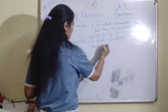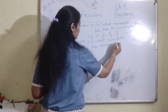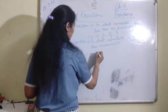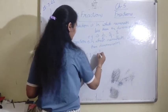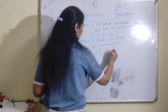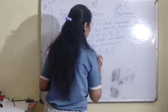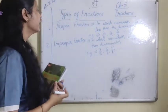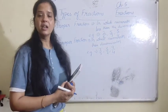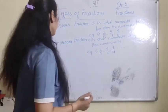The second type is improper fraction — in which the numerator is greater than the denominator. For example, 7 upon 5, 3 upon 2, 9 upon 4, and so on. Jahaanpar numerator denominator se bada hota hai, woh improper fraction hai; jahaanpar numerator denominator se chota hota hai, woh proper fraction hai.